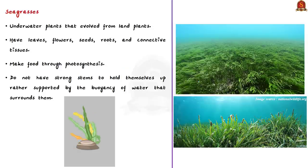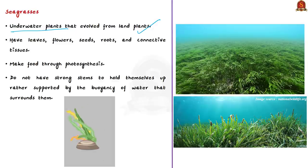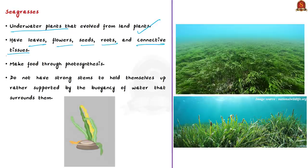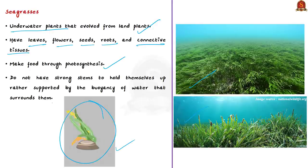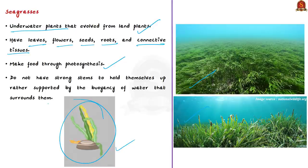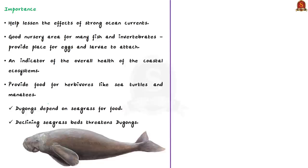Seagrasses are underwater plants that have evolved from land plants. Like terrestrial plants, they have leaves, flowers, seeds, roots, and connective tissues, and they make food through photosynthesis. The main difference is that seagrasses do not have a strong stem to hold themselves up — instead, they are supported by the buoyancy of water that surrounds them. Ecologically, seagrasses are very important, especially for the marine environment.